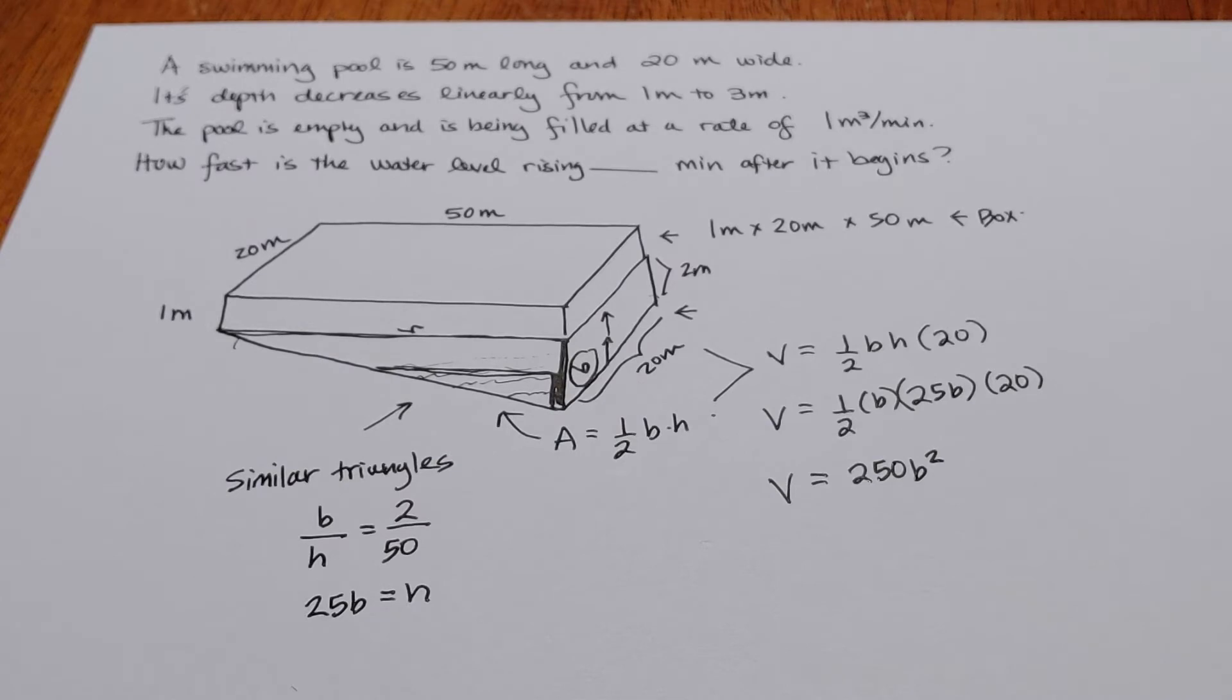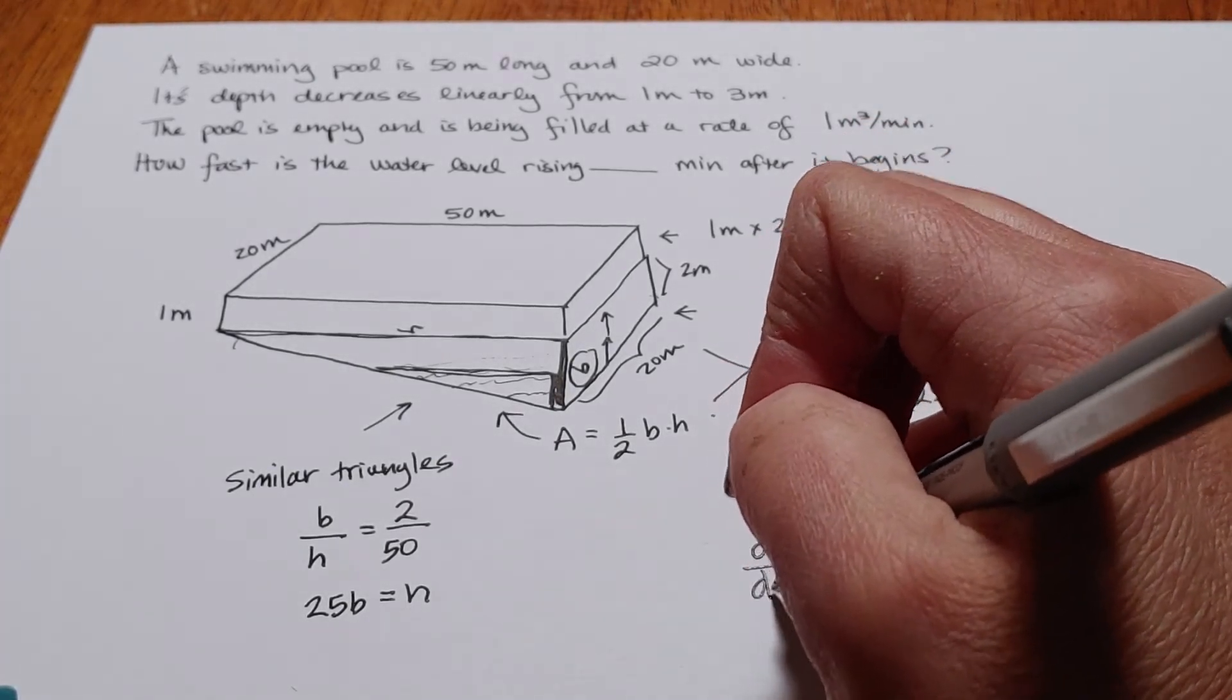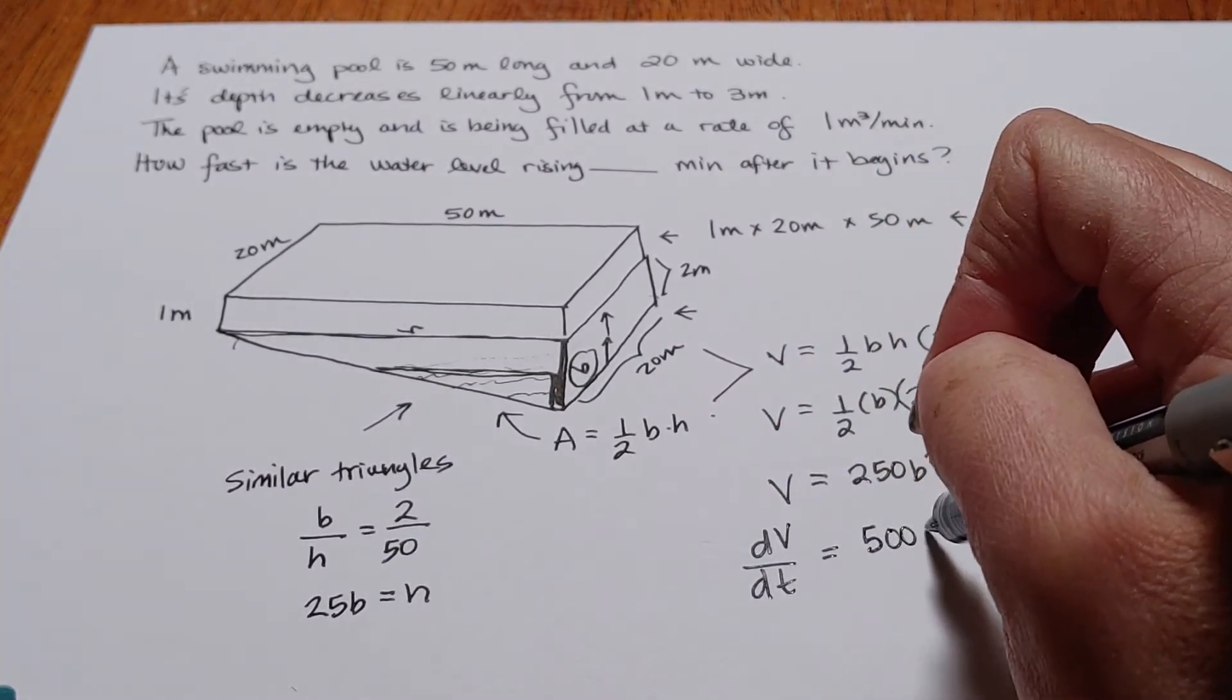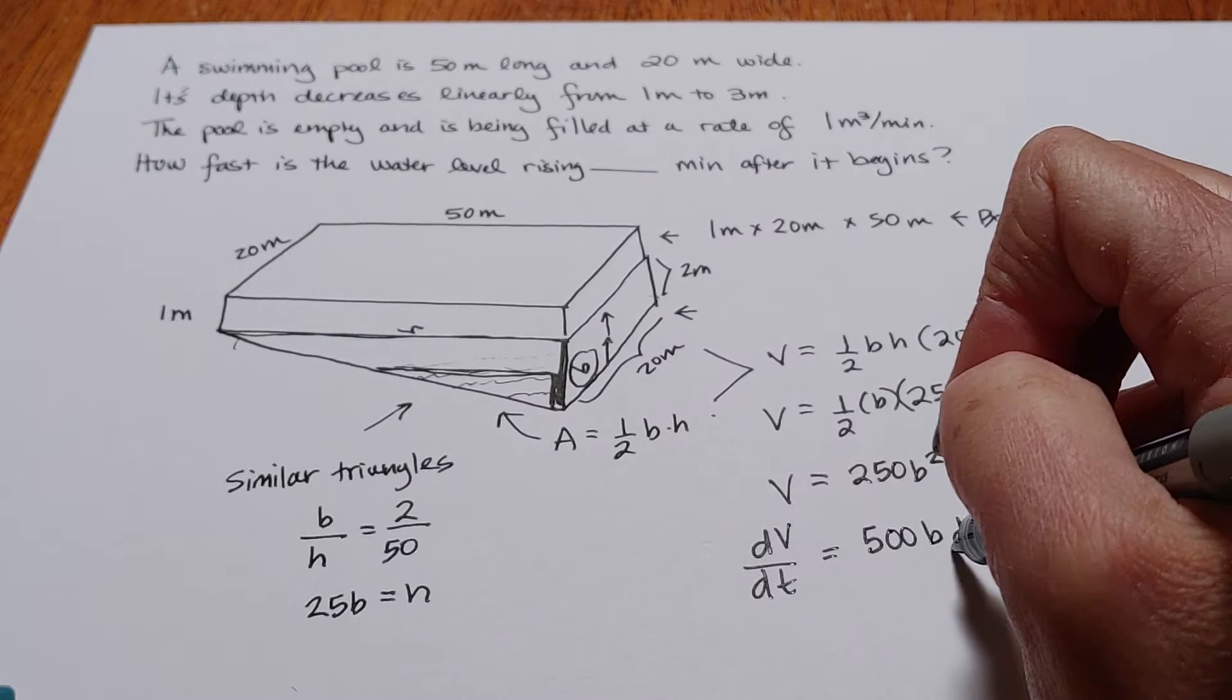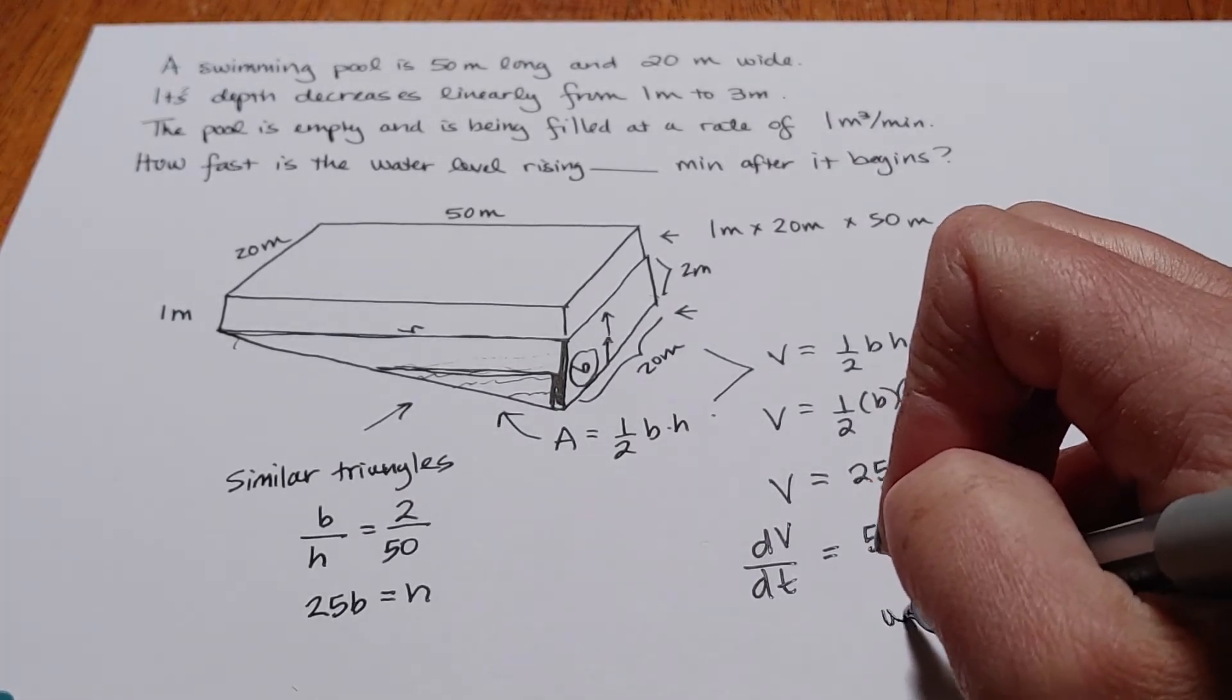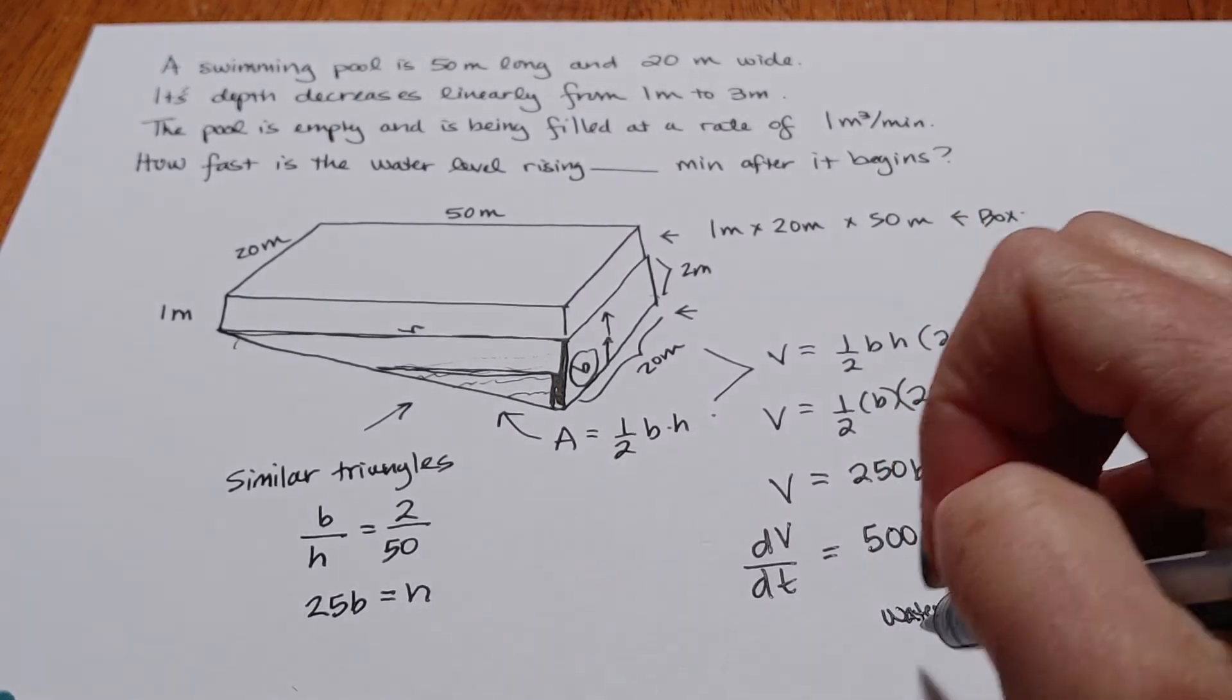All right, that looks a lot better now. So now I'm going to take the derivative with respect to time. And I'm going to get 500B dB/dt. So what's going to happen is B is our water depth at any particular moment in time.